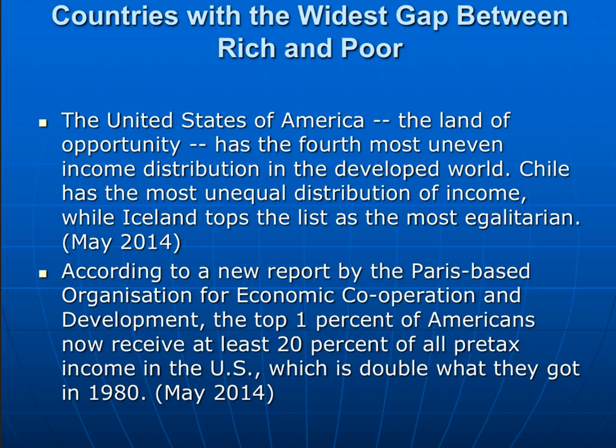The United States — the land of opportunity — has the fourth most uneven income distribution in the developed world. Chile has the most unequal distribution of income, while Iceland tops the list as the most egalitarian. According to a report by the Paris-based Organization for Economic Cooperation and Development, the top 1% of Americans now receive at least 20% of all pre-tax income in the United States, which is double what they received in 1980, suggesting that economic inequality is growing rather than shrinking in the U.S.